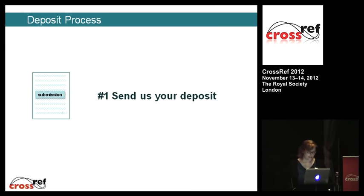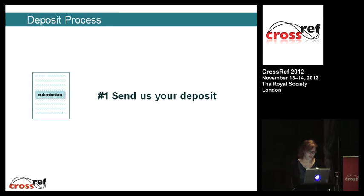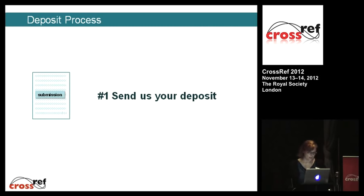The next steps are the most complex and involve sending and receiving data from CrossRef. The first thing you do is deposit DOIs and metadata with us, which enables inbound linking, meaning you and others are able to use DOIs to link to your content. You also look up DOIs for other publishers and include them in your references as outbound links. I'm going to cover depositing first, but querying and outbound linking can happen at whatever point in your workflow makes sense.